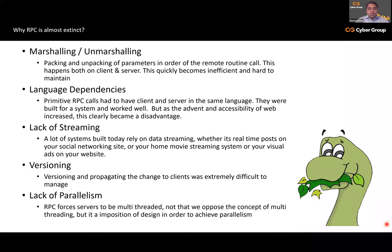Second drawback: language dependency. In early versions of RPC, the client and server had to be in the same language. They worked well for closed systems, but with the advent of the web, people started using multiple programming languages. Not all people had proficiency in the server language, which became a clear disadvantage. Third: lack of streaming. With the growth of the web, data streaming became a very important part of client-server communication — real-time posts, social networking, movie streaming — all requiring constant server-to-client streaming, which was very painful to implement in RPC.